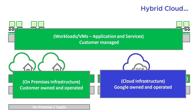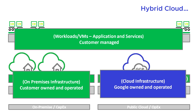Another way to think of it: on-premise is mostly CapEx and public cloud is mostly OpEx. That's probably the simplest way to think of it. We're just changing who buys, pays for, and maintains the infrastructure, and it's also a way to move into public cloud using a cloud consumption model.